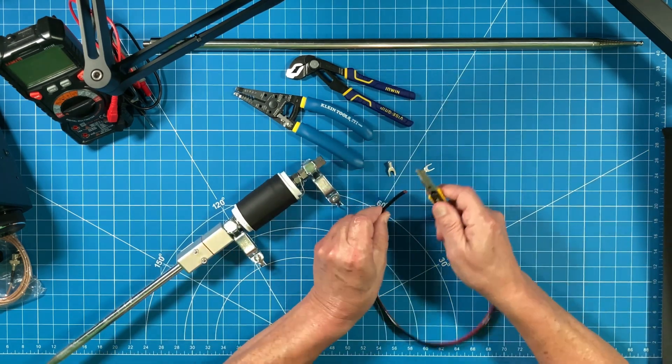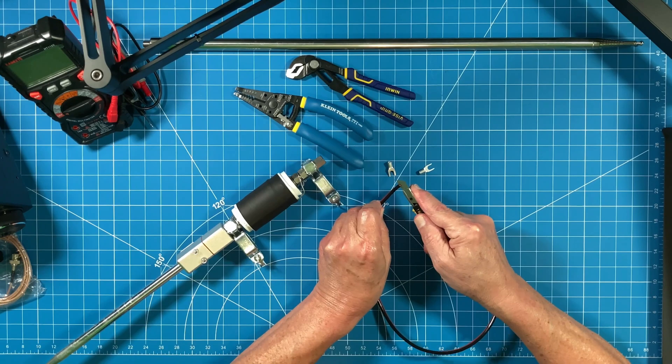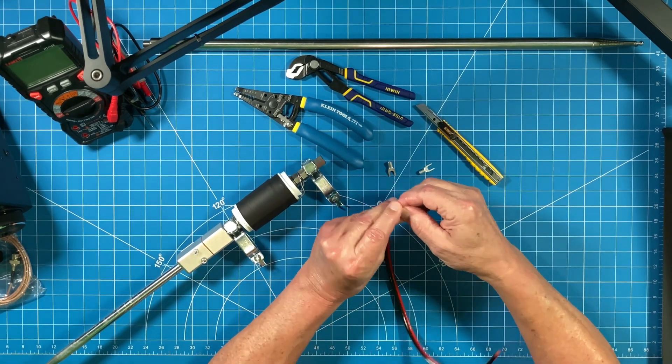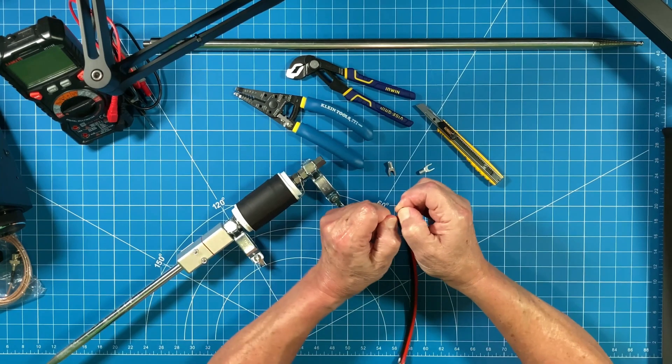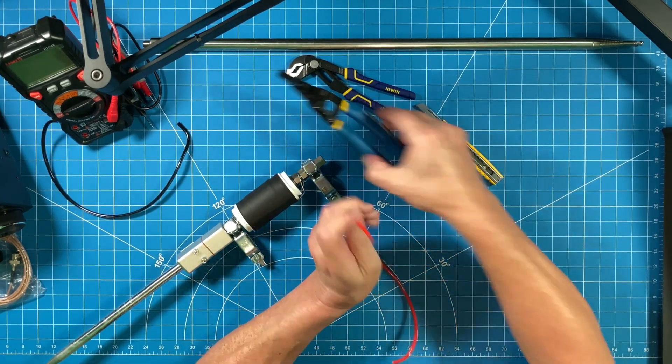Once we get a small slit on the end of this wire, we should be able to pull it apart fairly easily, and then we'll get ready to put our crimp connectors on the end of this.